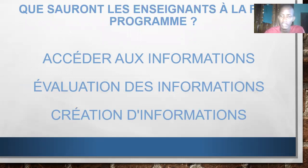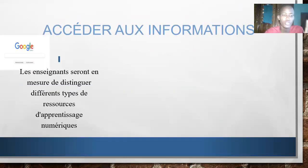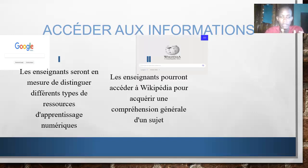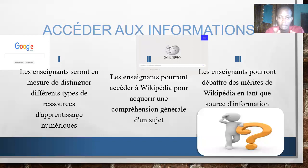Accéder à l'information, cela veut dire quoi? Accéder à l'information suppose que les enseignants seront en mesure de distinguer les différents types de ressources d'apprentissage numériques. Les enseignants pourront accéder à Wikipedia pour acquérir davantage de connaissances sur un sujet donné, et pourront débattre des mérites de Wikipedia en tant que source d'information.